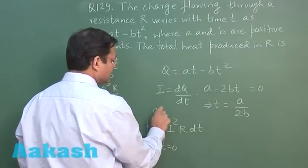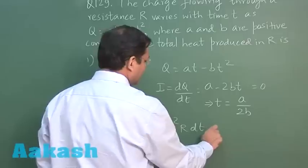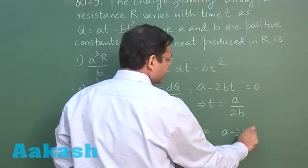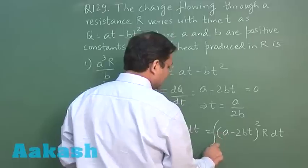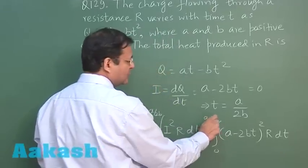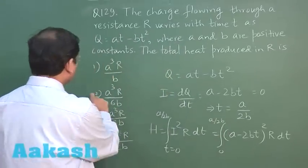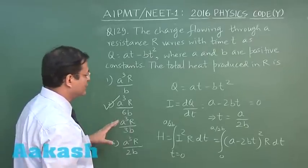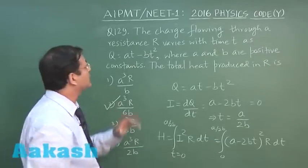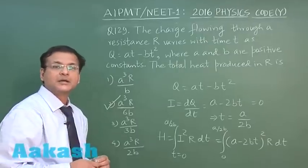The expression of i is already with you: a minus 2bt whole squared R dt, to be integrated between zero to a by 2b. If you calculate that, you will be getting the answer a squared R by 6b as total heat produced. So I am marking answer 2 for this question 129.